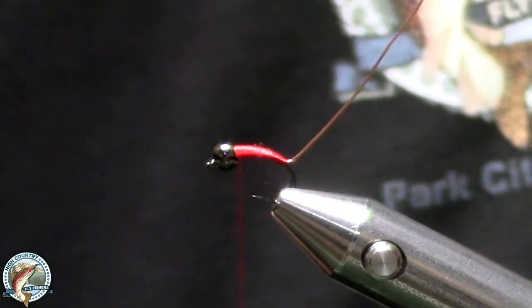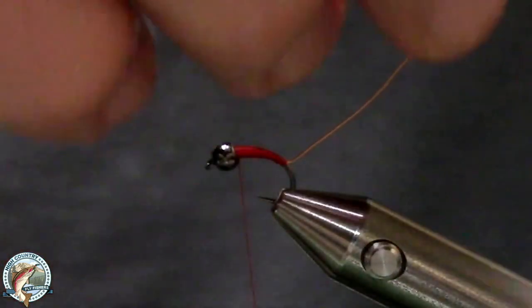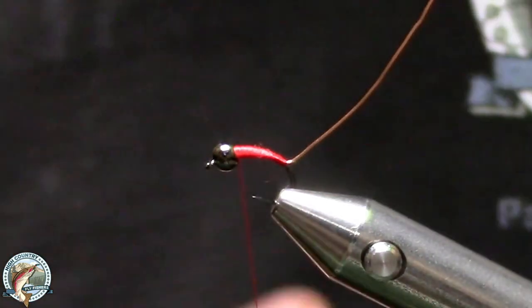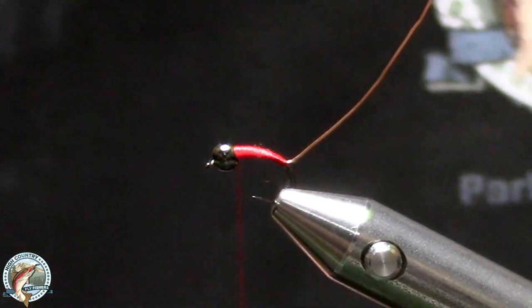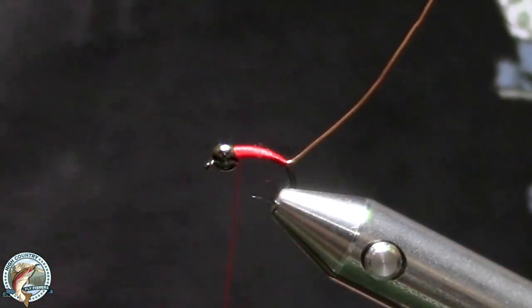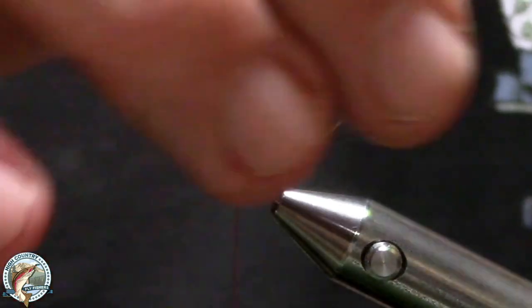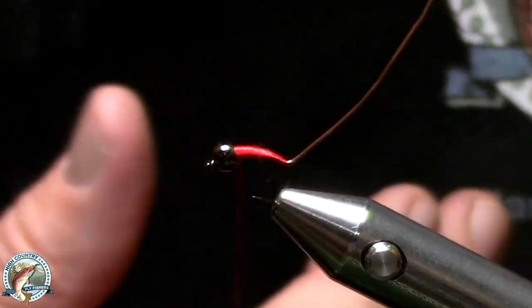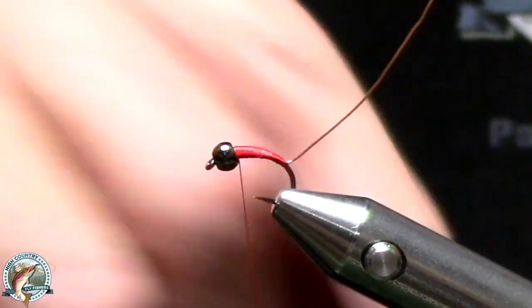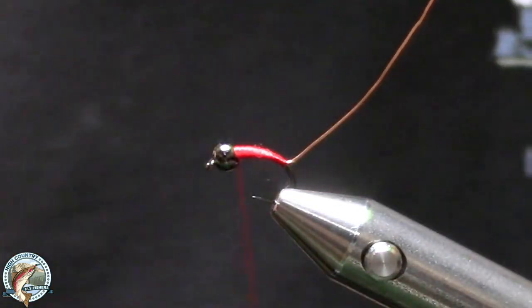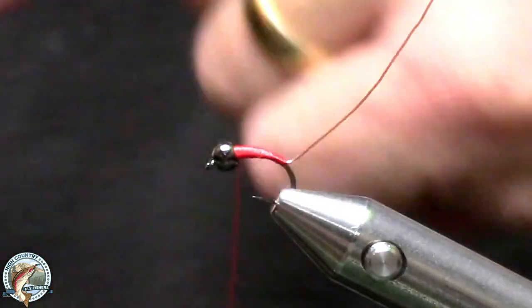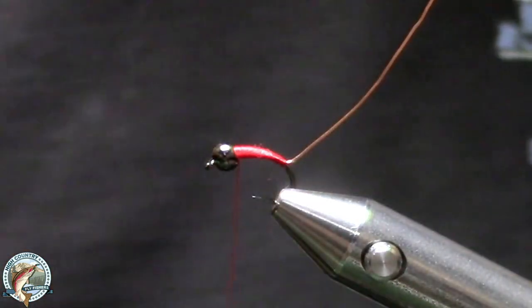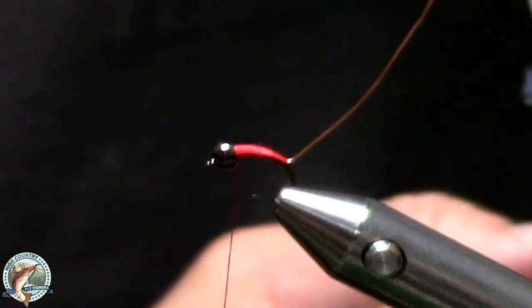Now I need to wrap my wire. Normally when we wrap wire, we do it for two reasons: one is either to protect materials and give the fly strength, or in this case, it's just to create a rib. If I've wrapped on, like on the next fly we'll be using some pheasant tail, if I wrap my pheasant tail this way, I'm going to wrap my wire the other way so that they cross and I give my fly some strength. On this fly, there's no way to give thread more strength really, so I can go ahead and wrap my wire in the same direction as I wrap my thread.